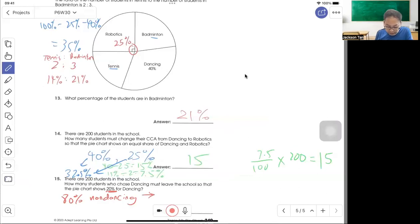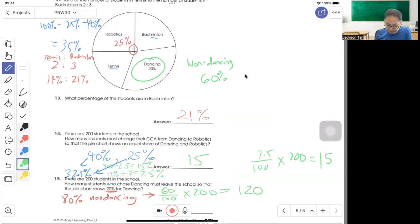So currently dancing is 40%. So non-dancing is 60%. So 60% of 200 students are 120. So 120 students is the 80% of non-dancing because the question says they want 20%. So let's find 20% then.